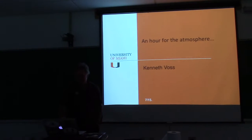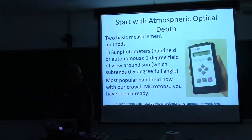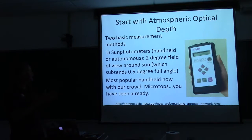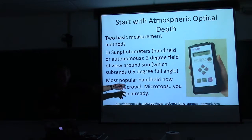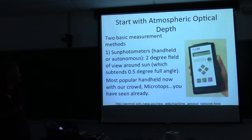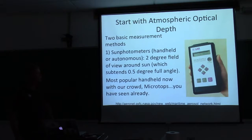So here's an hour for the atmosphere. What we'll start with is some stuff I've already talked about a little bit: how you measure atmospheric optical depth. There's basically two methods. One are sun photometers, such as the microtops that you have here — you've all gotten experience playing with that. The other sun photometer that's out there a lot is the CIMEL instrument, which is autonomous. I'll talk about that more toward the end.